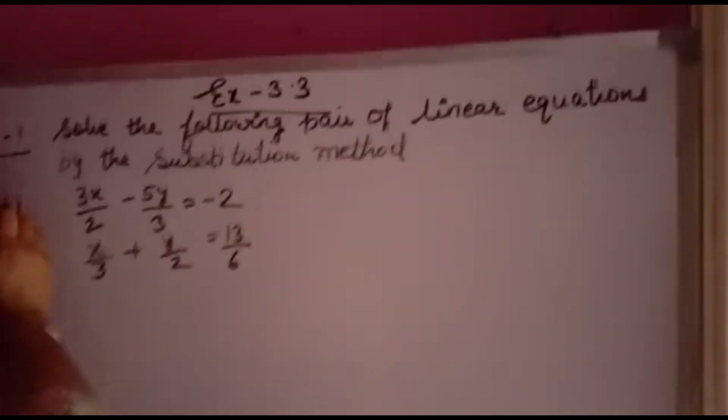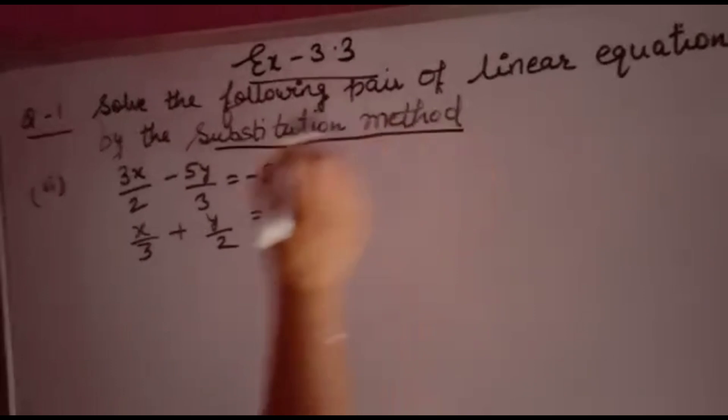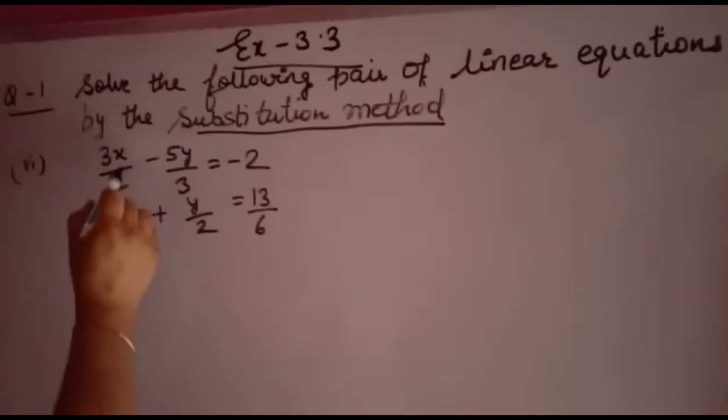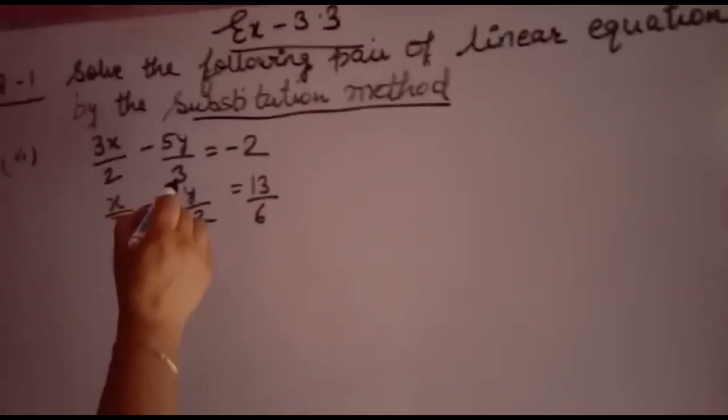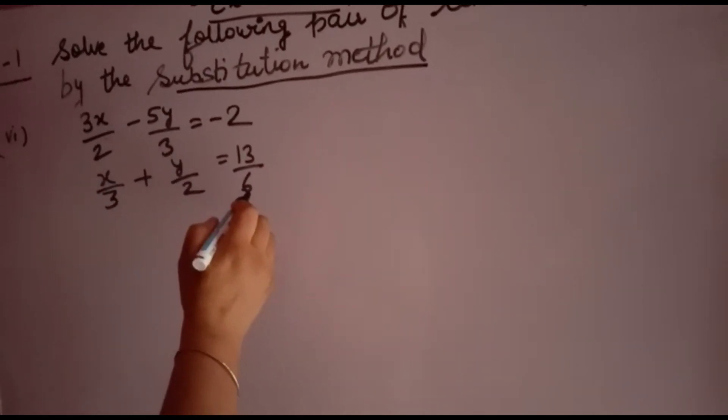0.3 is equation number first sixth part. Solve the following pair of equations by substitution method. 3x/2 minus 5y/3 equal to minus 2, and x/3 plus y/2 is equal to 13/6.